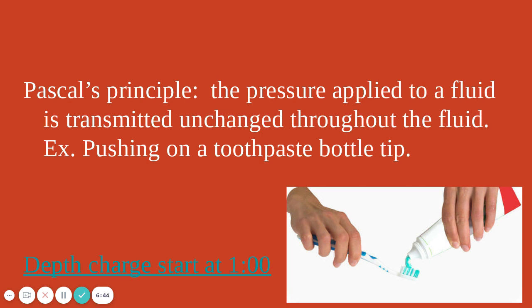This was also used in World War II with depth charges. A depth charge was a barrel of explosives that would explode at a certain depth in the water. A submarine would be cruising along, you'd drop the charge, and it would get deeper and deeper before exploding. Submarines wouldn't sink from being hit directly by a depth charge — it was the shaking from the explosion transmitted through the water, because that pressure is transmitted unchanged throughout the fluid.